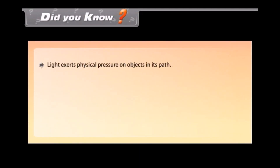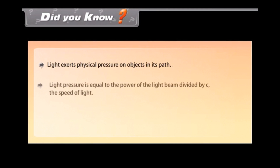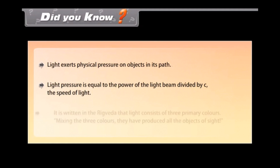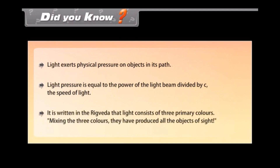Did you know? Light exerts physical pressure on objects in its path. Light pressure equals the power of the light beam divided by C, the speed of light. It is written in the Rig Veda that light consists of three primary colors, and by mixing these three colors all objects of sight are produced.